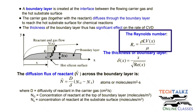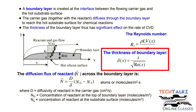The Reynolds number is ρLV divided by μ, where ρ is the density of the gas, L is the length of the substrate, V is the velocity at a particular distance x, and μ is the viscosity of the gas. The boundary layer thickness Δ(x) is equal to x divided by the square root of the Reynolds number.